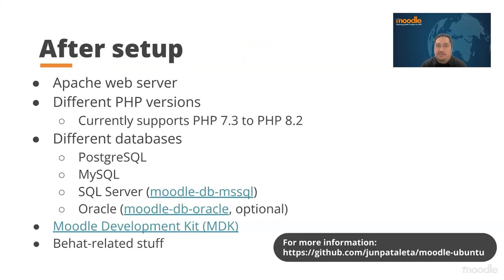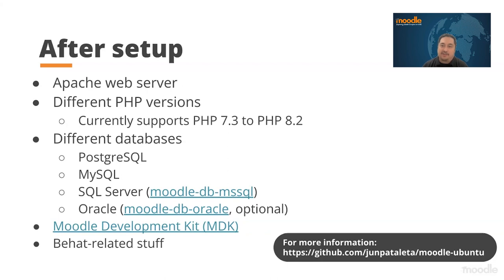After setup, the machine will have an Apache web server. You will have different PHP versions installed — currently PHP 7.3 to PHP 8.2. You will also have different databases set up, like PostgreSQL, MySQL, SQL Server, and Oracle via Docker. It will also install Moodle Development Kit, or MDK. If you are new to developing in Moodle, MDK would be a very useful tool, especially when contributing patches to Moodle. It will also install BHAT-related stuff to allow you to run BHAT tests on the machine.